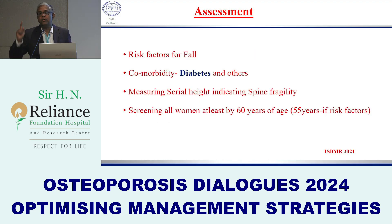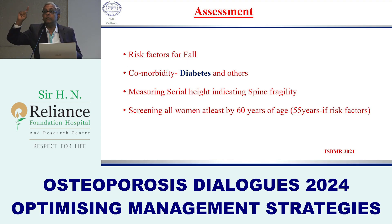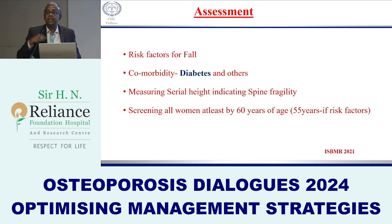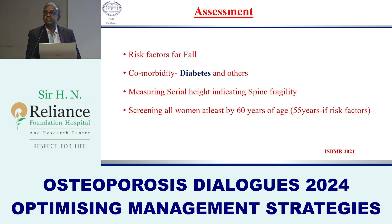For assessment, it is very important to check risk factors for falls and comorbidities, especially diabetes. Clinically, height measurement is very important — if height is decreasing, the patient is likely fracturing. For screening in the Indian setting, all postmenopausal women should be screened at age 60, or earlier at 55 if risk factors like diabetes are present. This is the current recommendation from the Indian Society of Bone and Mineral Research.